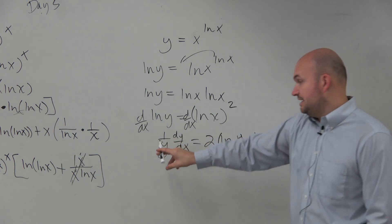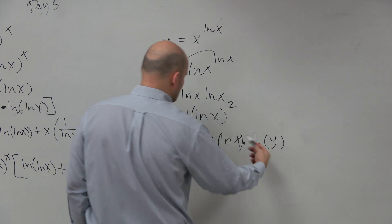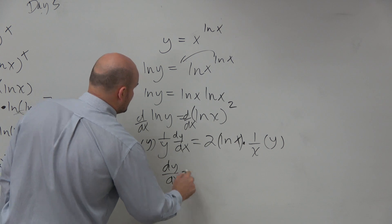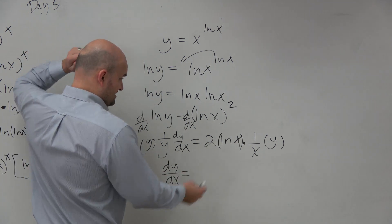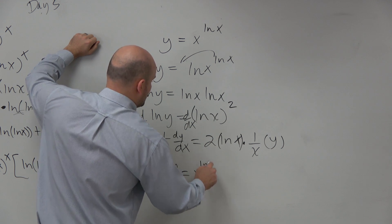And then to get rid of the y and multiply by y on both sides, I'm actually going to write the y in front. dy dx is equal to my y, which is, let's see, nothing's really going to cancel out here. So it's right in front, x to the ln of x.